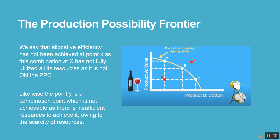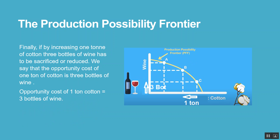We say that allocative efficiency has not been achieved at point X, as this combination has not fully utilized all its resources, as it is not on the PPC. Likewise, point Y is a combination which is not achievable, as there are insufficient resources to achieve it owing to the scarcity of resources. Finally, if by increasing one ton of cotton, three bottles of wine have to be sacrificed, we say that the opportunity cost of one ton of cotton is three bottles of wine.